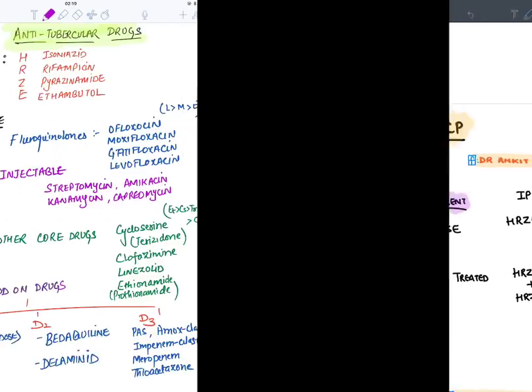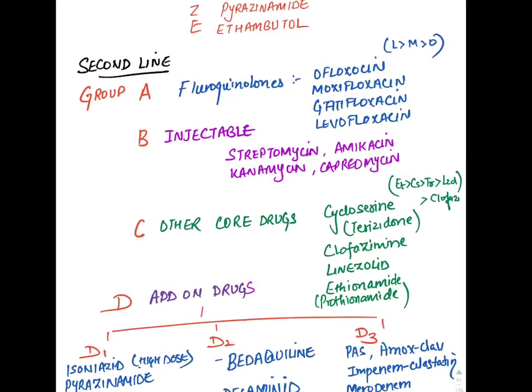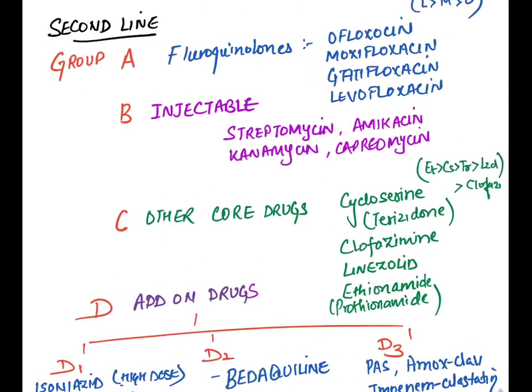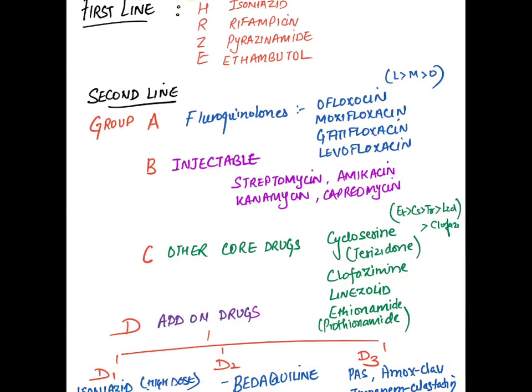Second-line drugs are divided into 4 groups — ABCD. Group A are oral fluoroquinolones, which are bactericidal. The mnemonic is OMGL: ofloxacin, moxifloxacin, gatifloxacin, and levofloxacin. Among them, we most commonly use levofloxacin.